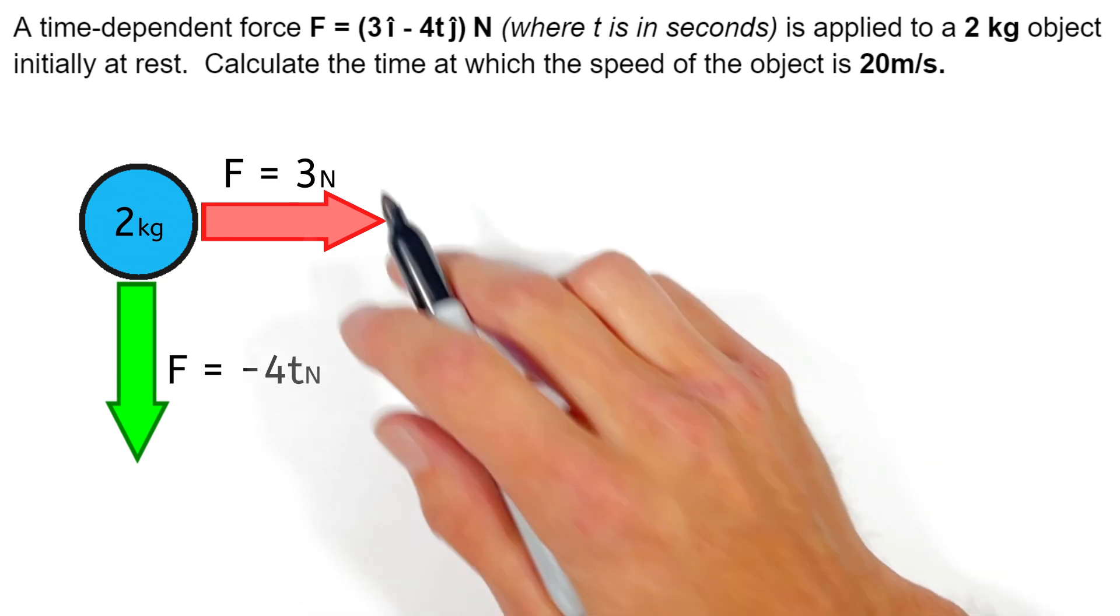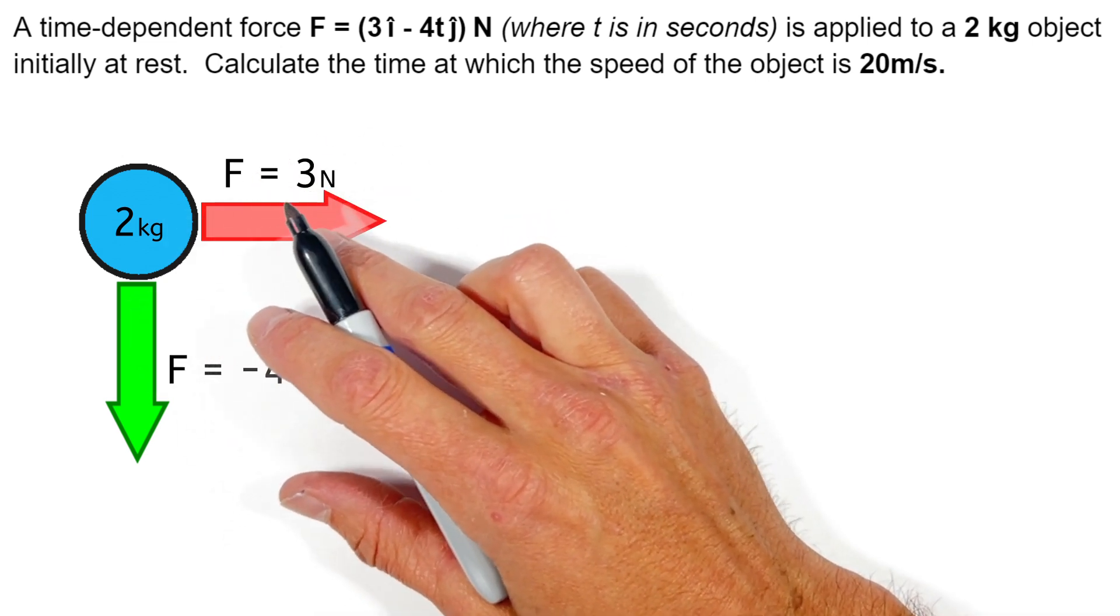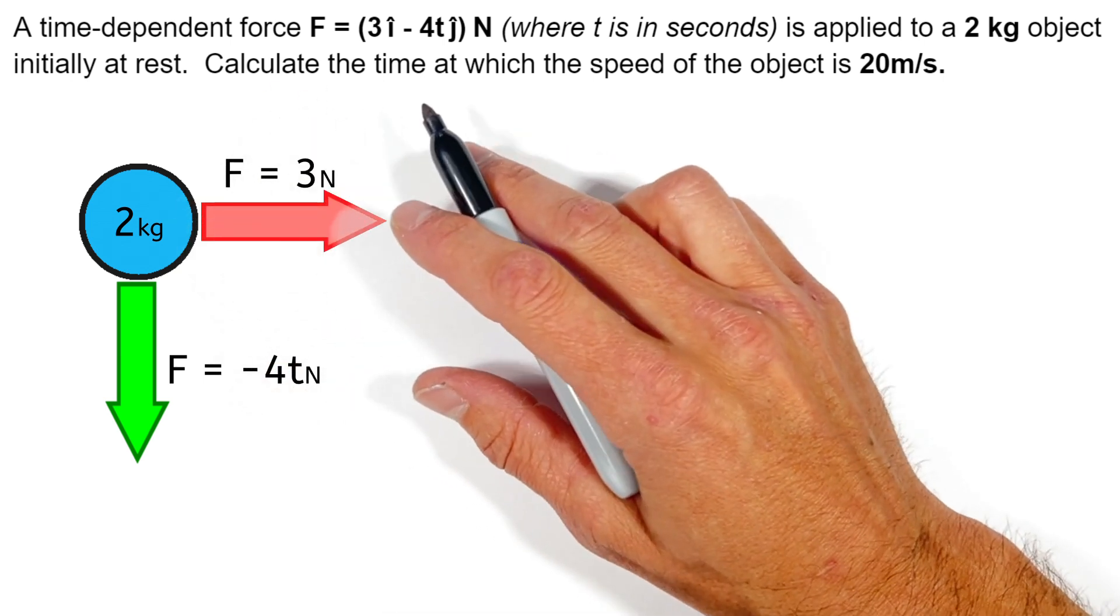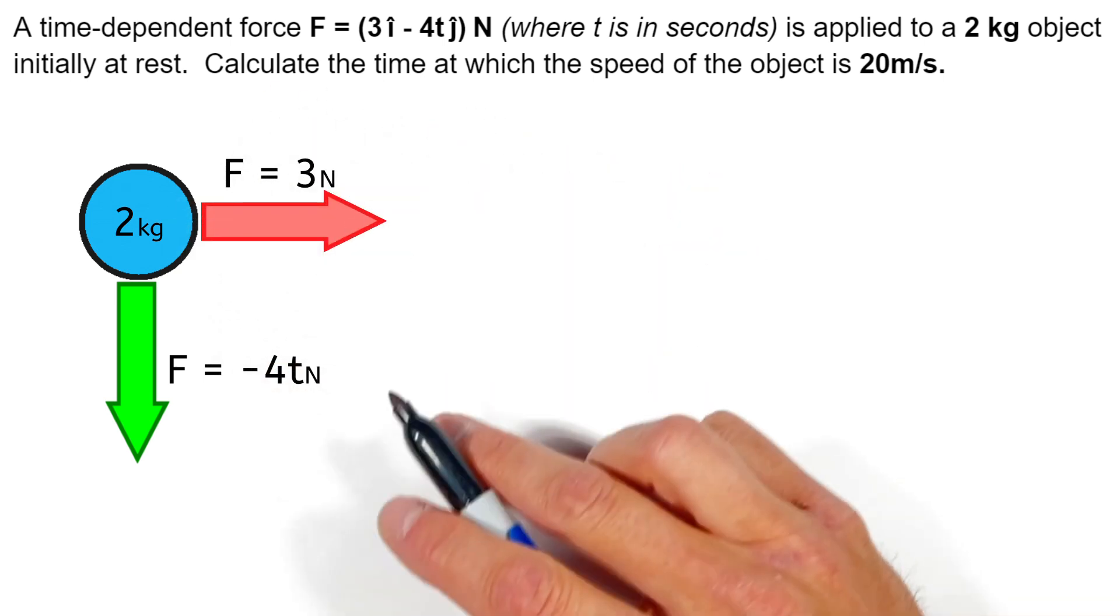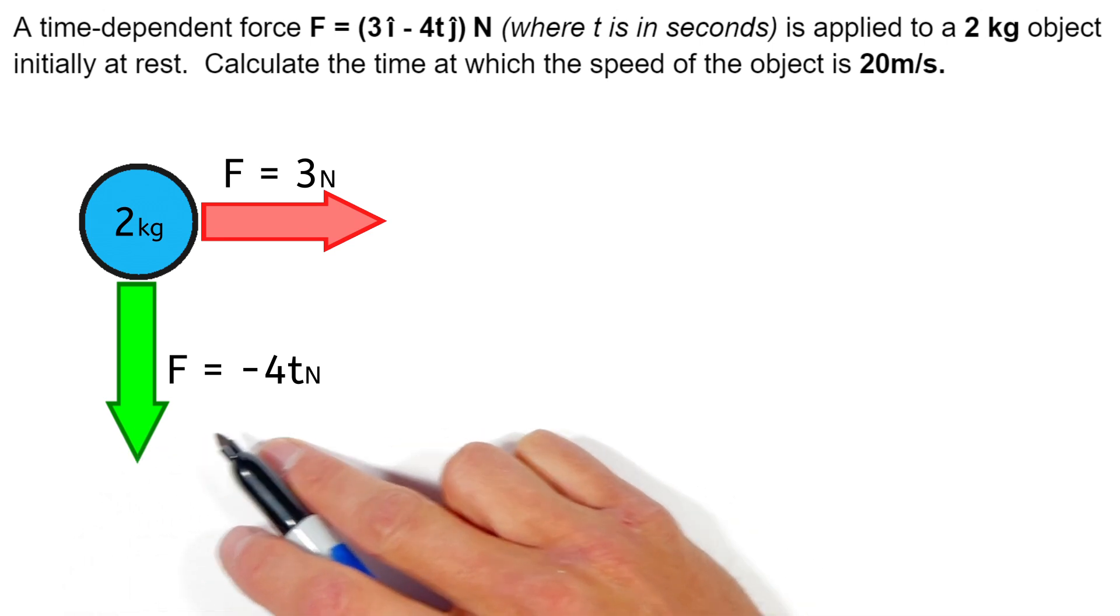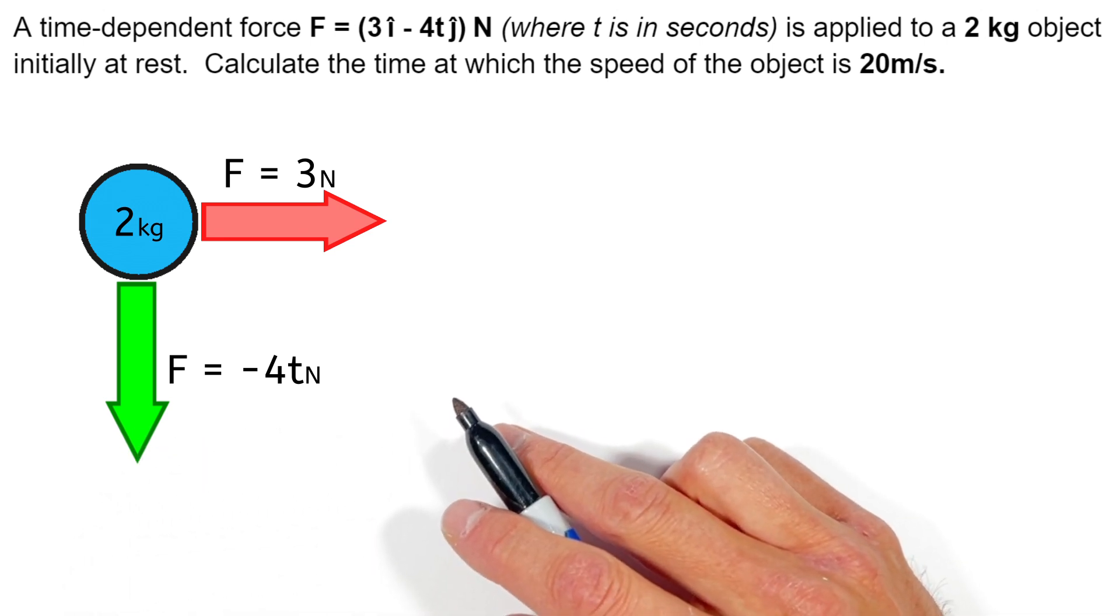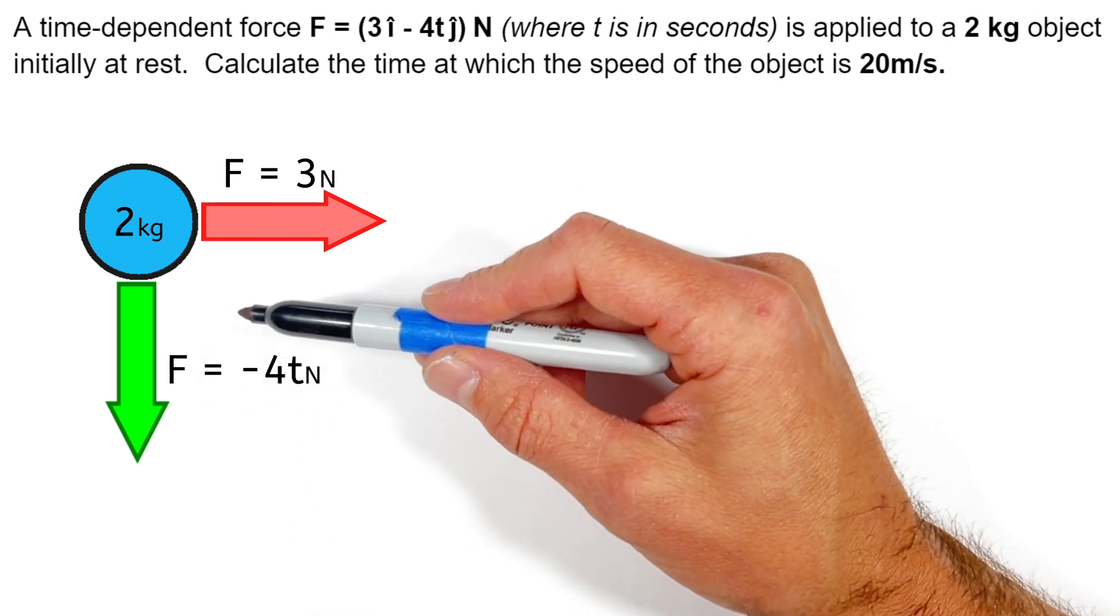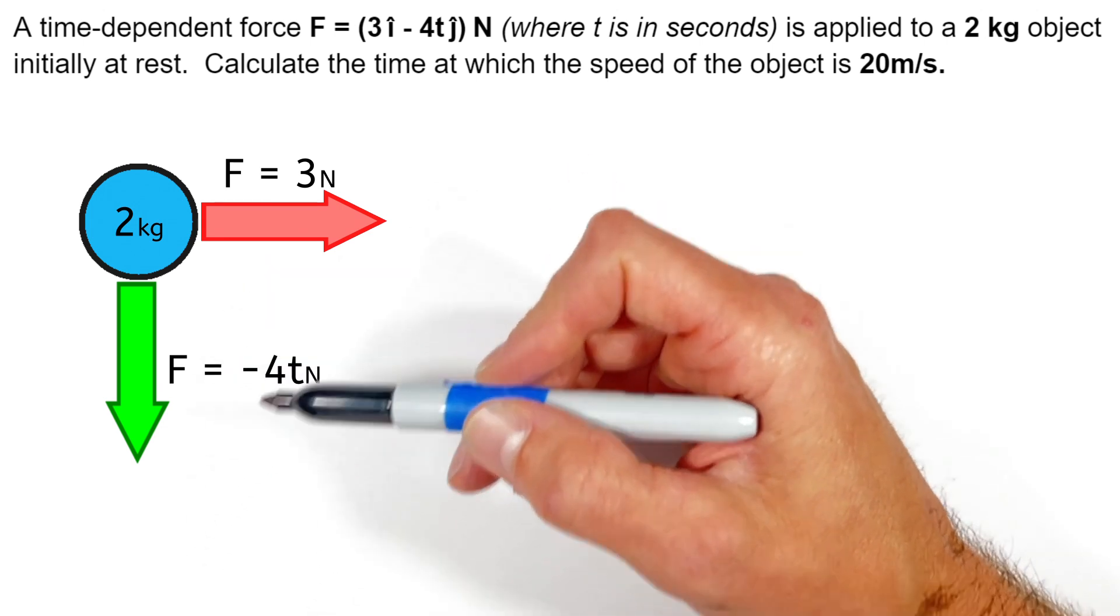Now to start this problem, we need to take a closer look at what this force function actually means for this object. And this force, even though it's a single force, we can treat it as though it's actually two separate forces. One force of 3 newtons acting in the horizontal axis, or in the i direction, and a separate force of minus 4t acting in the j direction, or in the vertical axis.